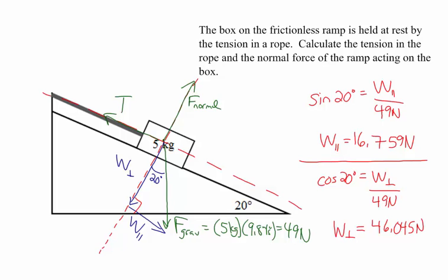Since the box is in equilibrium, forces must add up to zero. The tension pulls up the ramp and the parallel component of weight pulls down the ramp — those two cancel out. So the tension equals 16.759 newtons. The forces perpendicular to the ramp must also cancel: the perpendicular component of weight is 46.045 newtons downward, so the normal force must be 46.045 newtons.